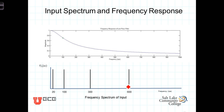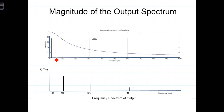Now we determine the magnitude of the frequency spectrum of the output by taking the input frequency spectrum and multiplying it by the magnitude of the frequency response of the filter. We've overlaid the frequency spectrum of the input on top of the frequency response of the filter. The signal at 20 radians per second is multiplied by a value pretty close to 1, so the output magnitude of that signal will be close to 5 volts. The higher-frequency components are multiplied by increasingly diminishing values of the transfer function.